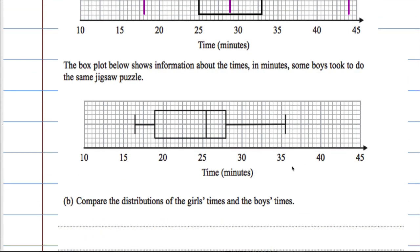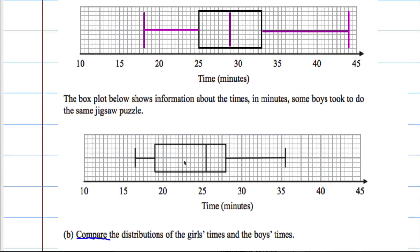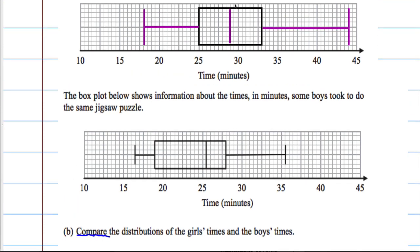So when we're asked to compare two distributions, generally what we need to comment on is an average and a measure of spread. On average, the mean, the median, or the mode. From the boxplots, we can see that the median time for girls is greater than the median times for boys.